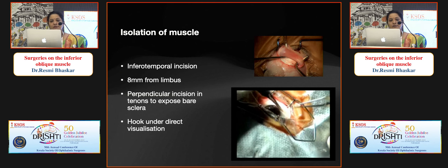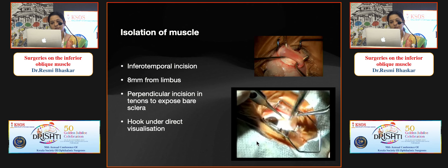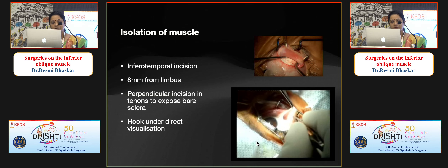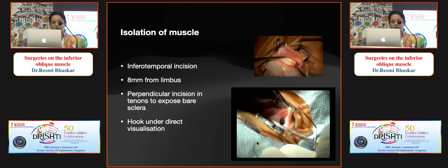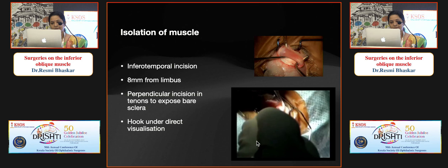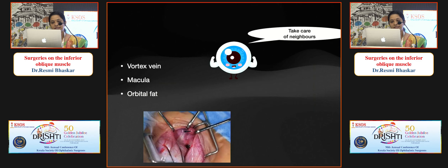For muscle isolation, take an infratemporal incision 8 mm from the limbus and make perpendicular incisions in Tenon's capsule to expose bare sclera. In the video, after the conjunctival split, the inferior oblique muscle is visualized lying transversely and hooked under direct visualization. The muscle is 9 mm wide, inclined posterolaterally. The maximum recession that can be performed is 12 mm. Important surrounding structures to protect include the vortex vein, the macula close to the insertion, and orbital fat.